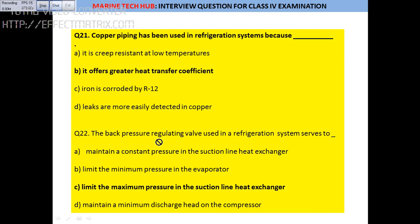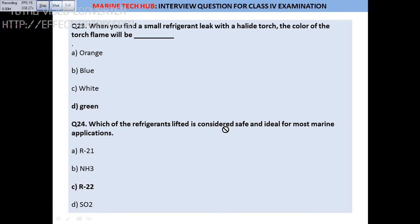Question 22: A back pressure regulating valve in the refrigerant system is there to limit the maximum pressure in the suction line of the heat exchanger — answer is option C. Question 23: When checking for a freon leak using a halide torch, if there is a leakage, the color of the flame will turn green.